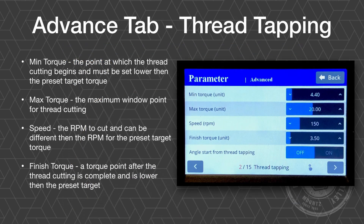In the advanced tab of the parameter menu, on the second page are the thread tapping settings. We have our min torque, which is the point at which the threads begin to cut — this needs to be set lower than the preset target torque. We have our max torque, which is the high point of the window, so anything outside of that we would get an error during the thread cutting process. We have the speed, which controls the RPM. And then we have our finishing torque, which once the system sees that finishing torque, it will then look for the final torque.